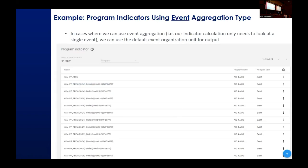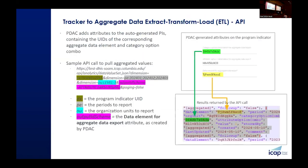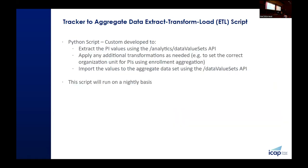Here are two more examples for your reference. The last thing I want to show is the process that we followed for the API to process the data. We have what PDAC generated for each indicator, and then we have our API call. This was all done through a Python script that our developer wrote. It extracted these values from the API, did some transformations, and then imported the data in. This script would run every single night.